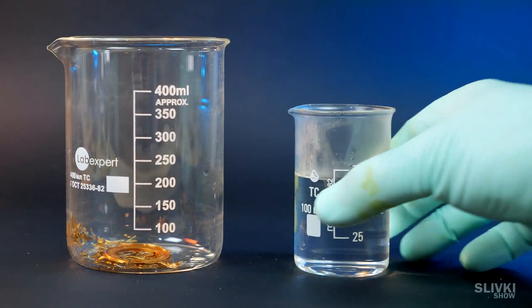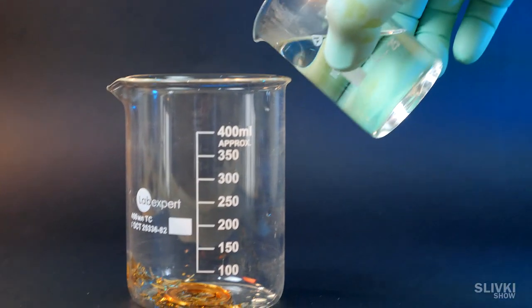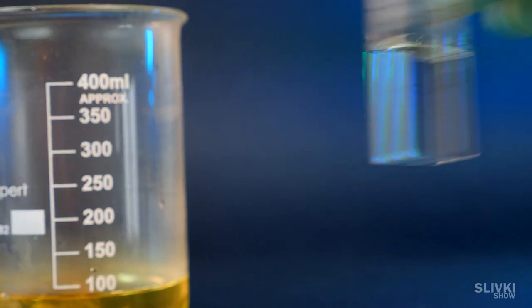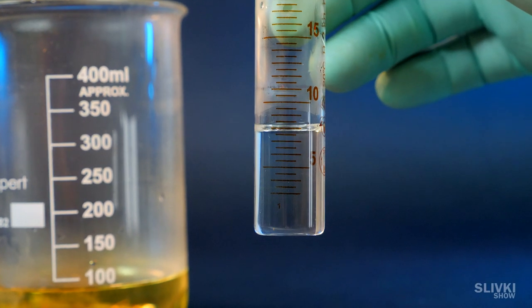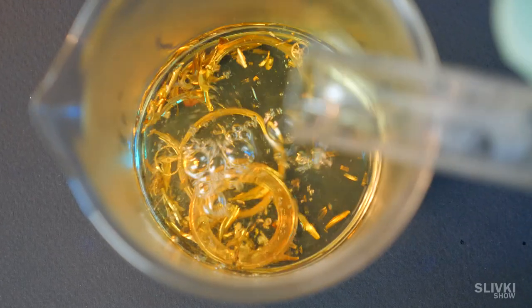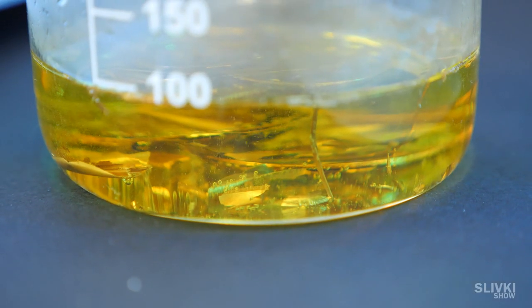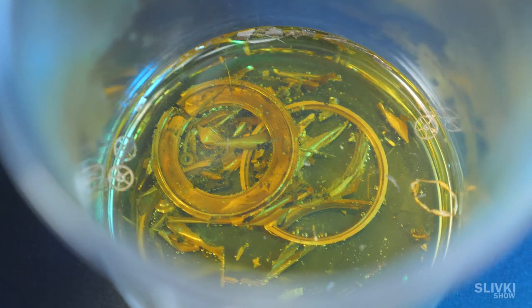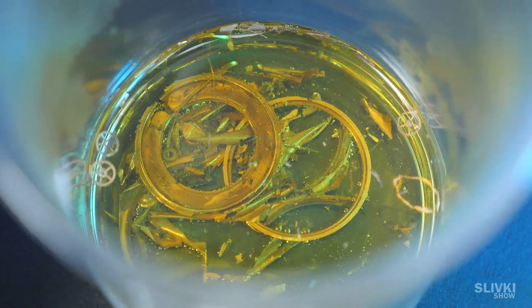Then we took about 70 ml of hydrochloric acid and poured it to the gold. After that, we added another 70 ml of nitric acid. This mixture of acids has even more power of dissolving metals, and it can dissolve even our gold.